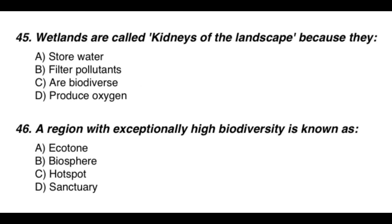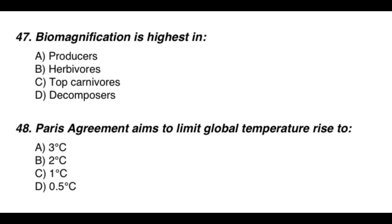Question 45: Wetlands are called the kidney of the landscape because they — the correct option is B — filter pollutants. Question 46: A region with exceptionally high biodiversity is known as — the correct option is C — hotspot. Question 47: The correct option is C — top carnivores.